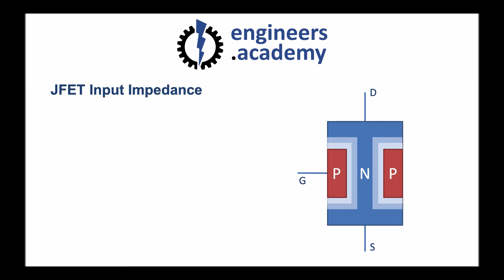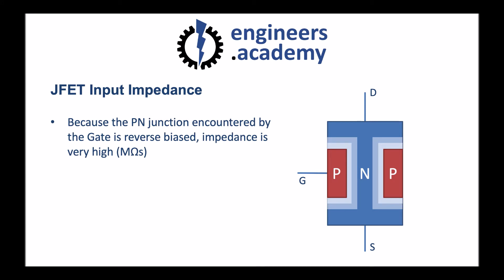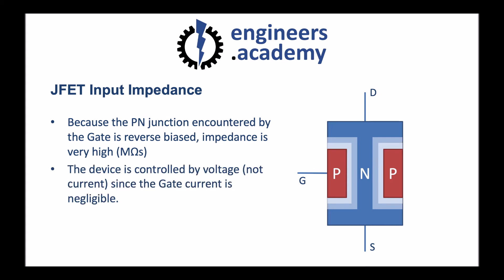We mentioned one of the advantages of J-FETs as having a high input impedance, and we can see why in this diagram. Because the P-N junction encountered by the gate is reverse biased, the impedance is very high. We're applying a negative voltage to the gate, and so just like a reverse biased diode has the negative applied to the P-type material, likewise we're encountering a reverse biased P-N junction. This means that the impedance is very, very high, typically in the mega-ohms. The device is controlled by voltage, and the reason this is the case, and not by current, is because of this high resistance. The gate current is actually so small because of the high resistance that it's negligible. And so it's actually the voltage that's controlling the transistor's operation here, and not the current like in a bipolar junction transistor.